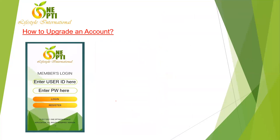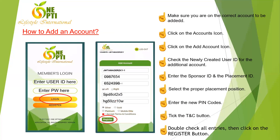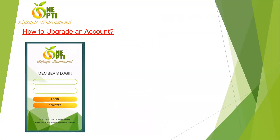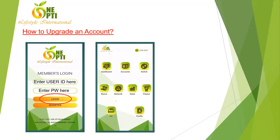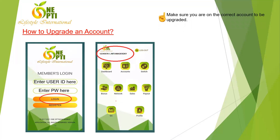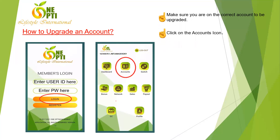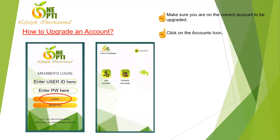Now let's go over how to upgrade an account. For an account upgrade, log in to the account you want to upgrade. For example, if you're on a Silver account and want to upgrade to Mobile Stockist, log in with your username and password and click Login. Once in the menu, make sure you are on the correct account to be upgraded, then click the Accounts button.